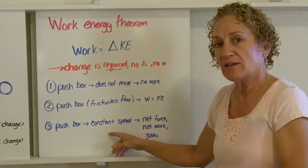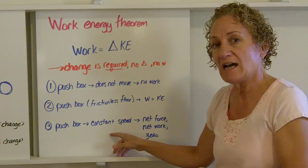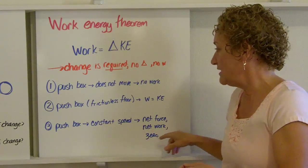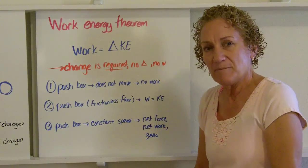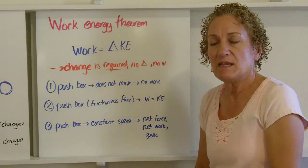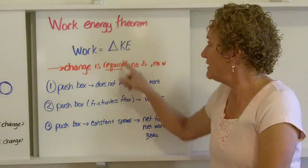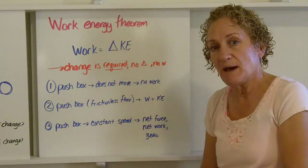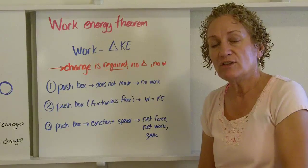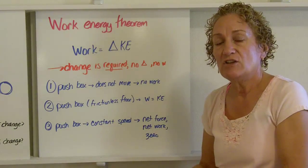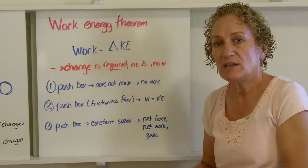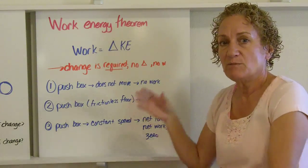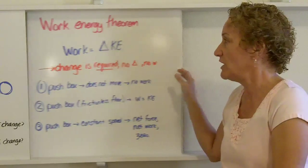Now if you push the box, third case, you're pushing the box at a constant speed. The net force and the net work is zero. Now why would that be? Because if it's a constant speed, there's no change in velocity, and this is change in kinetic energy. Well, your mass of the box probably didn't change, so the only thing that could have changed was velocity. No velocity change, no kinetic energy change, no work. It's just status quo. It just keeps moving like it should have been moving, like it was all along.